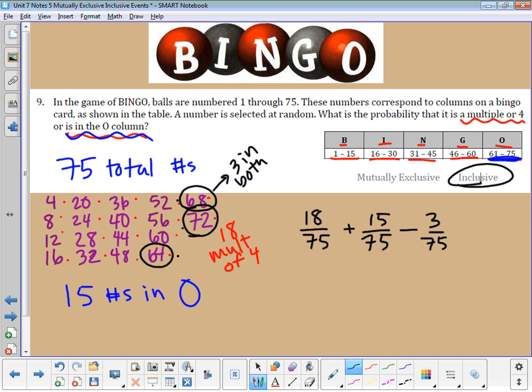That means these are inclusive events. If I add those together, 18 plus 15 minus 3 gives me 30 out of 75. I can reduce that. If I divide by 5, I get 6 out of 15. I can cut that again and divide by 3, that means I have 2 out of 5.